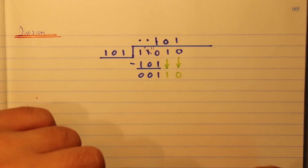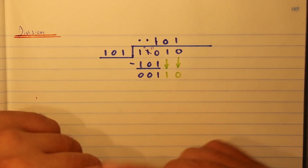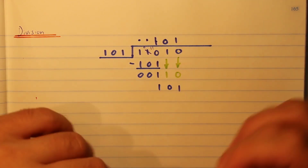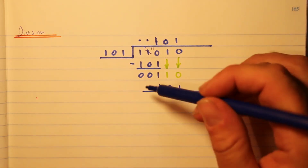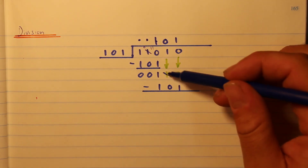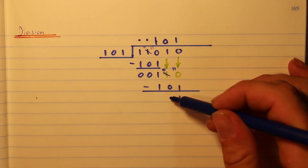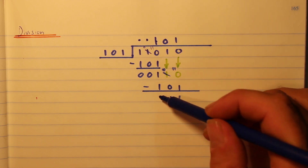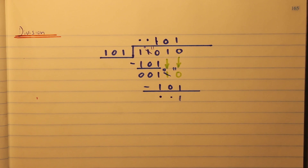So I write down one. Then one times that number gives us the same number: 101. We subtract again, borrowing: two minus one is one, zero minus zero is zero, one minus one is zero. That's our remainder, and that's how we do binary division.